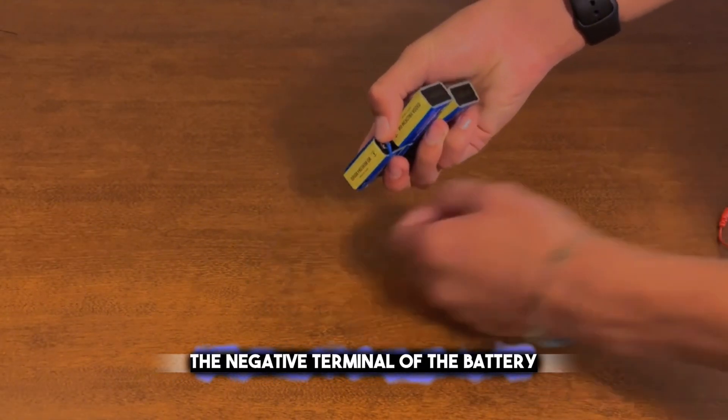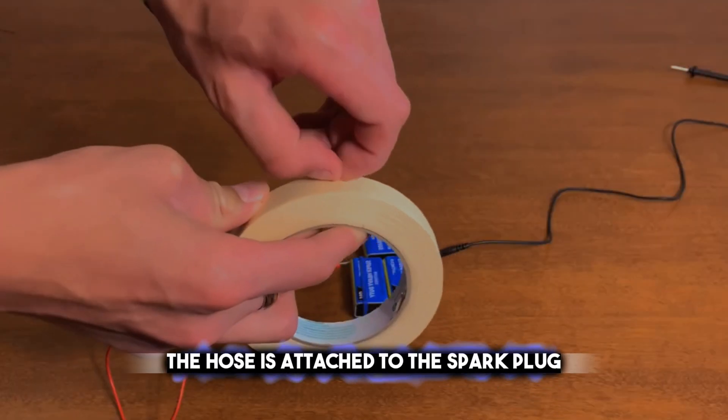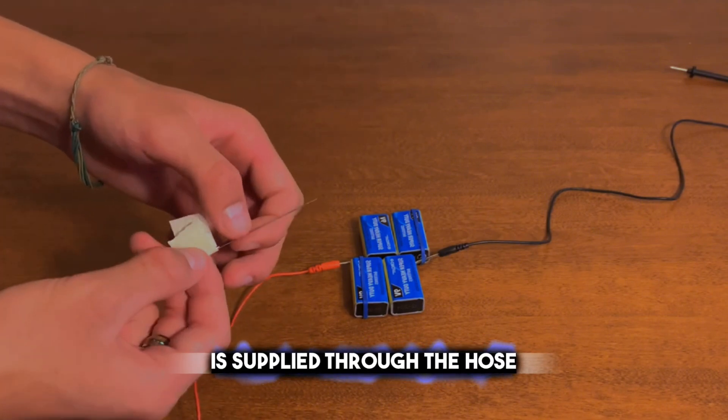The negative terminal of the battery is connected to the metal piece that is to be cut. The hose is attached to the spark plug, and a compressed gas, such as air or propane, is supplied through the hose.